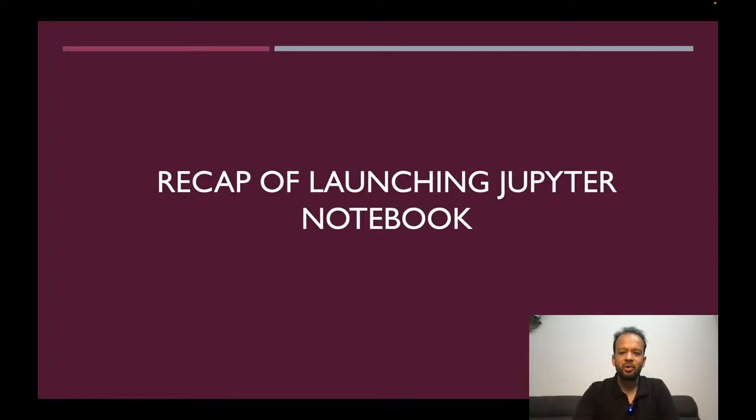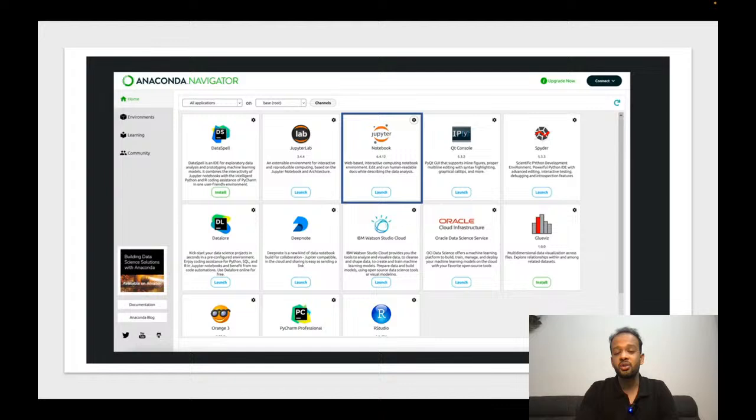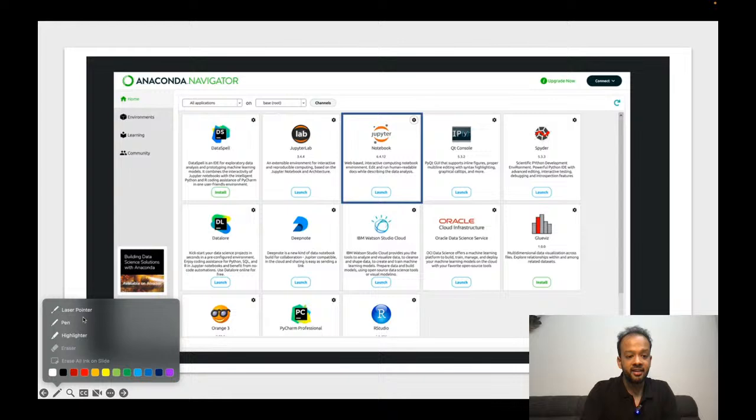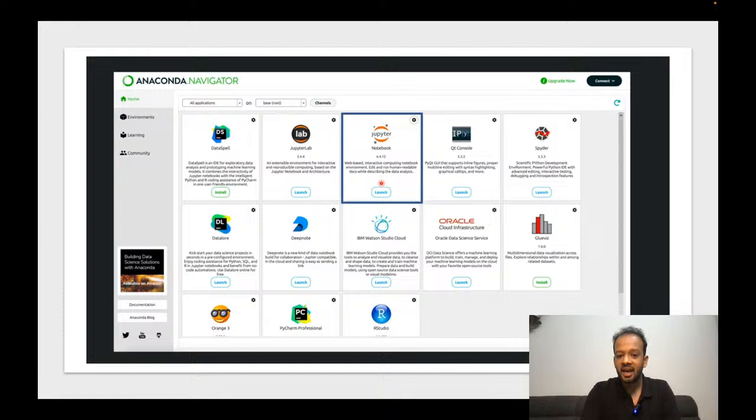First, let's have a recap of how to launch Jupyter Notebook. If you have Anaconda already installed, all you need to do is go to Anaconda Navigator. If you're using Windows, go to the Start button and search for Anaconda Navigator and launch it. If you're on a MacBook, search for Anaconda Navigator and click on it — this window will open. Within this window you'll see different applications, and the one we're concerned with is the Jupyter Notebook interface. Click Launch and the Jupyter interface will open.